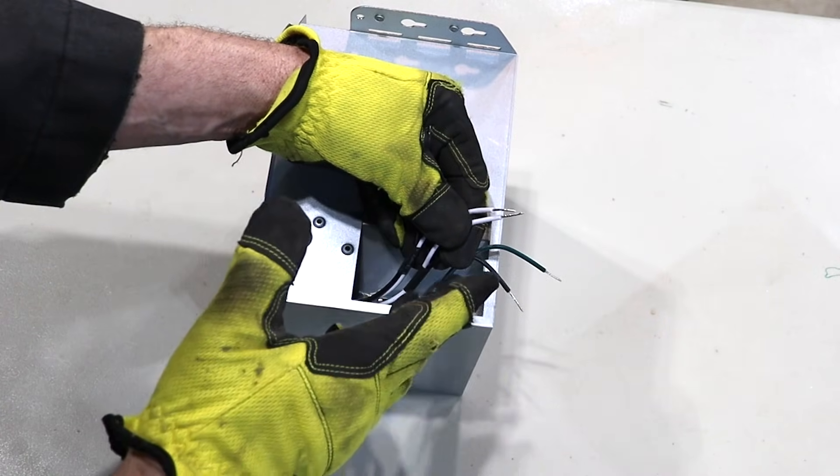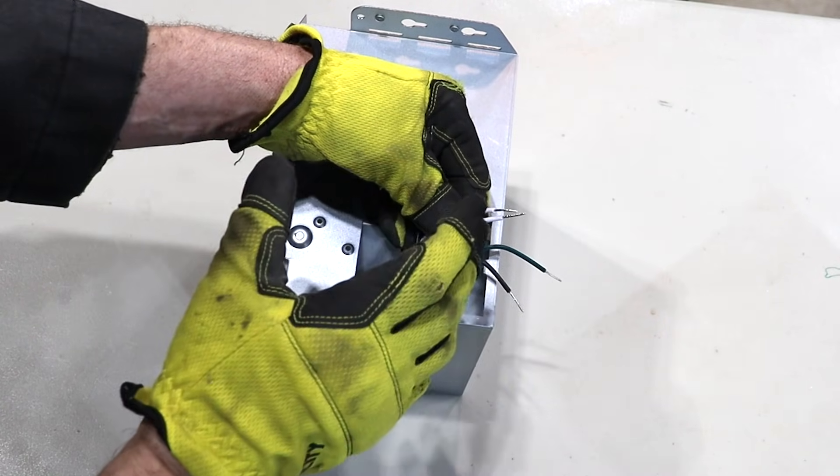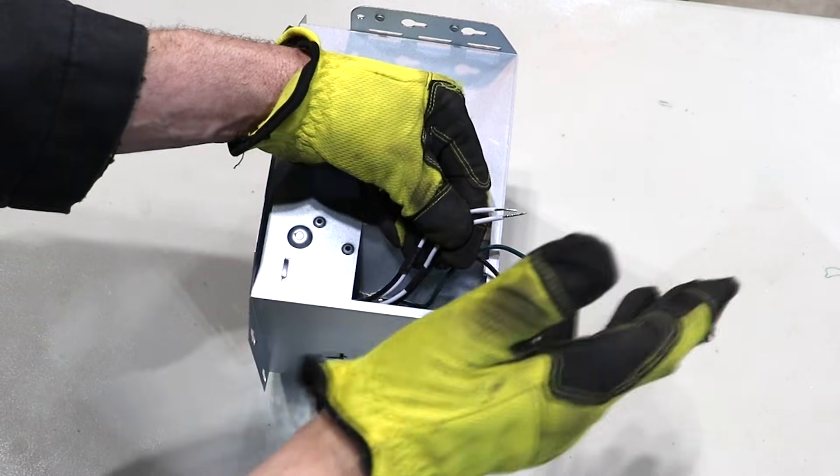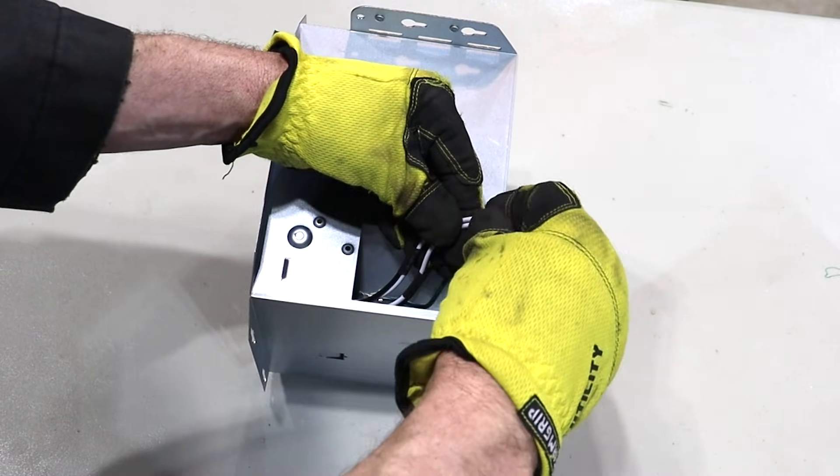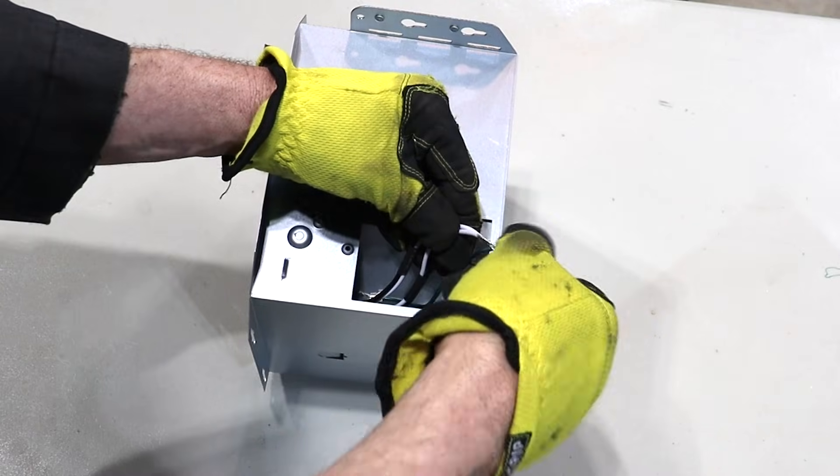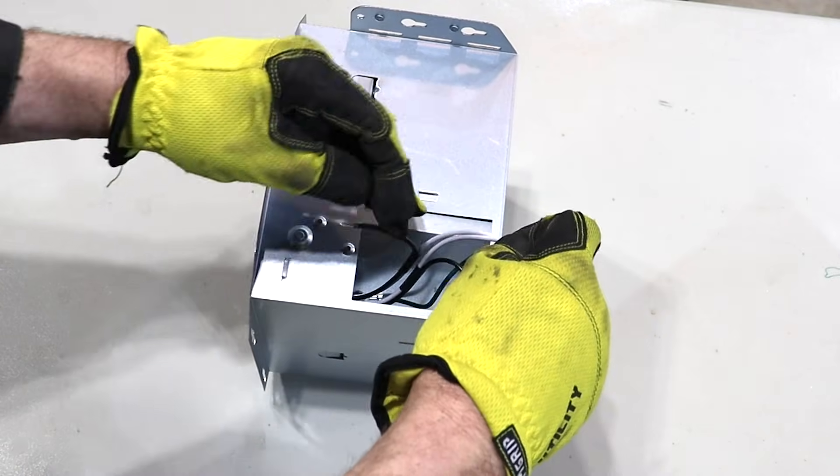All these wires are made to withstand a certain rating and you're never gonna be able to exceed that rating. So you can go ahead and just wire nut these two neutrals together. That's not a big deal.